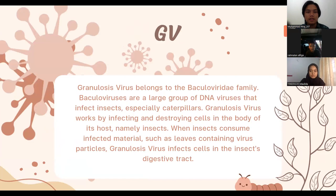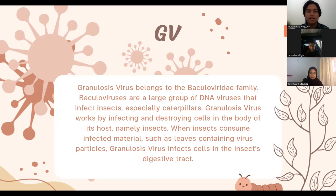Granulosis Virus, GV, belongs to the Baculoviridae family. Baculoviruses are a large group of DNA viruses that infect insects, especially caterpillars. GV works by infecting granules that fall in the body of its host. When insects consume infected material, the granules contain virus particles. Granulosis Virus's impact is felt in the insect's digestive tract.